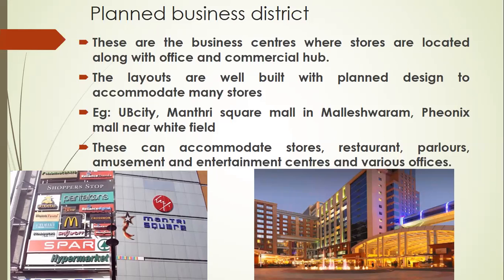Why we take all these malls under planned is that they are well planned from the start — how the shopping has to happen, from where to where people have to go. Every mall will have three to five floors. In the last floor they keep a food court. In the food court, everything is planned: which store goes where, where the fast food is, where the meals are, where the ice cream parlor or juice center is. Big stores like McDonald's or KFC are highlights of the mall and usually have big stores on the first or ground floor so people can get into those stores directly.